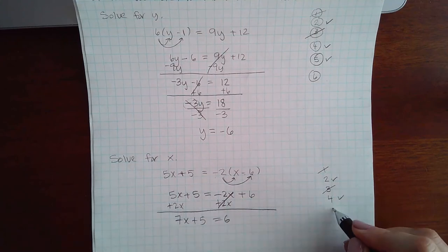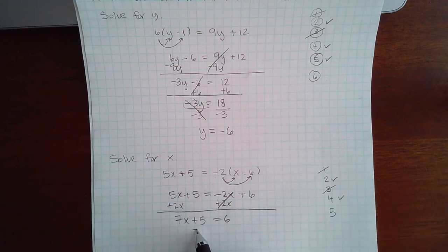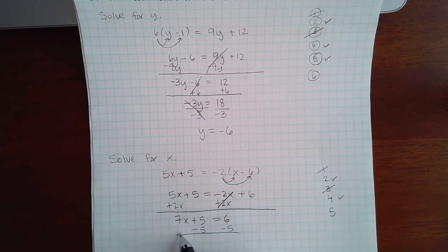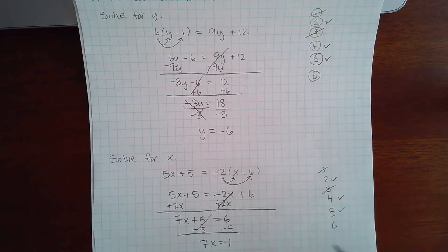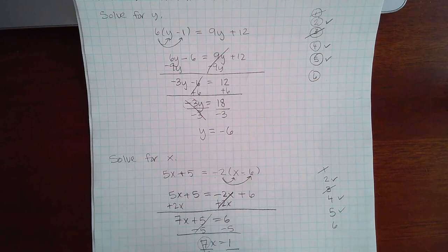Then I'm going to do step 5, which is to move the constant term over to the right side. And then the last step is to divide by the coefficient. So this coefficient in front is what I'm going to divide by. And I end up with x equals 17.